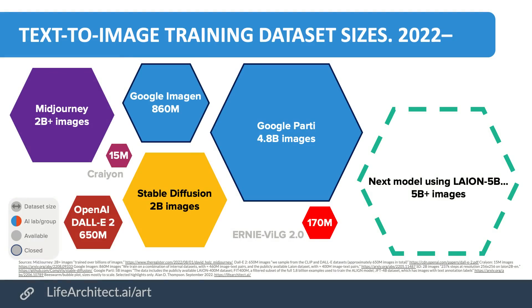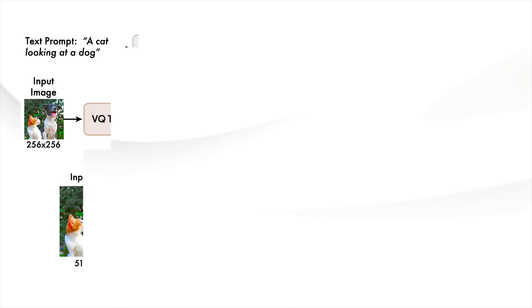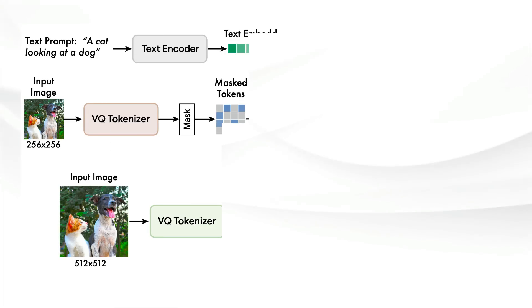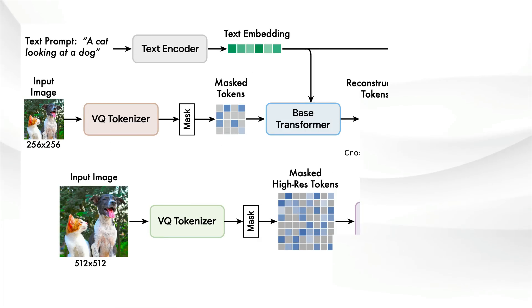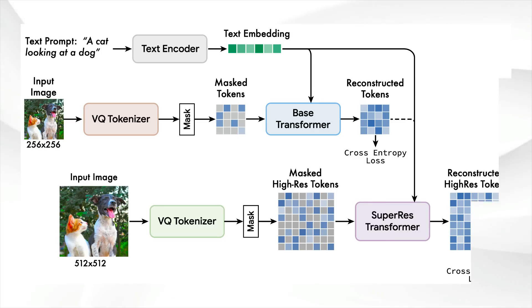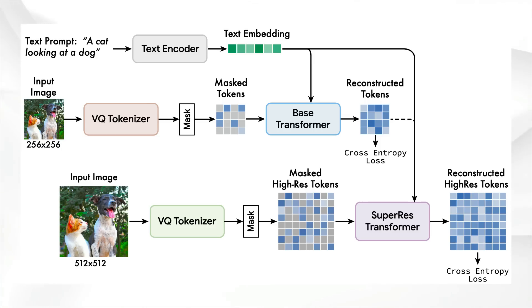It's just smaller than Dolly 2 for its training data. We won't go too deeply into how it works, but this is what the flow looks like. It takes a prompt, like 'a cat looking at a dog,' encodes that text into an embedding, then feeds in an input image, tokenizes that, masks some of the tokens, and reconstructs those. Then moving down, you've got the 512 by 512 input image, which is twice the size. It also masks the high-res tokens, joins them together and reconstructs those in parallel. This is a traditional use of the transformer model — it is essentially completing tokens, just like we do in a large language model, but for vision.